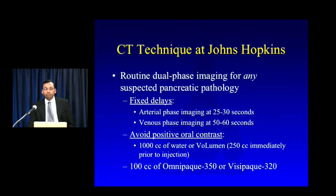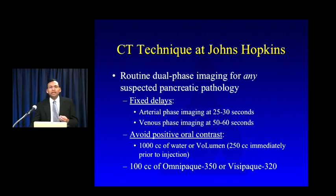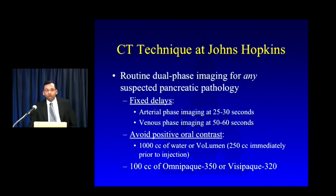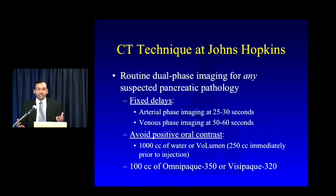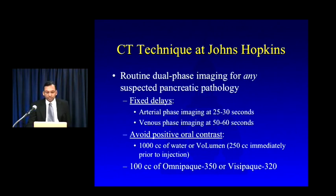Our standard pancreatic protocol at Hopkins is a dual-phase study for any suspected pancreatic pathology — not just masses, but things like pancreatitis as well. This entails an arterial phase at roughly 25 to 30 seconds and a venous phase at roughly 50 to 60 seconds. We do not give positive oral contrast, as it interferes with 3D post-processing and can cause streak artifact and beam hardening that may obscure lesions. Instead, patients get a neutral contrast agent — either water or Volumen, about a liter — including some immediately prior to injection.